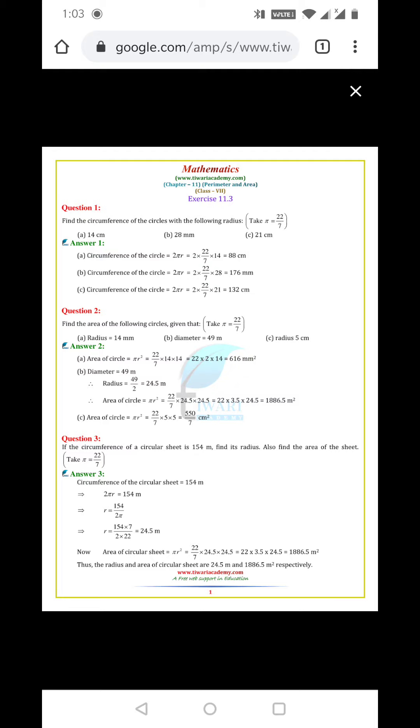Area of circle, we use the formula πr². π times r square. That is πr square.